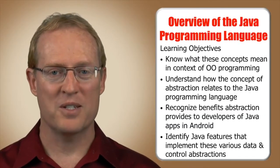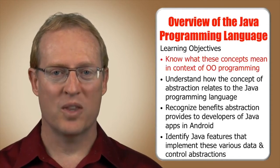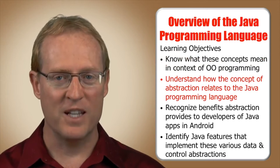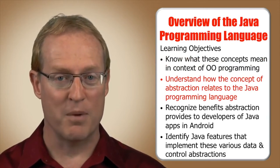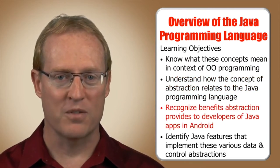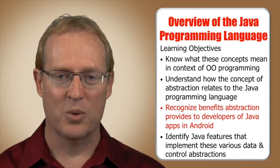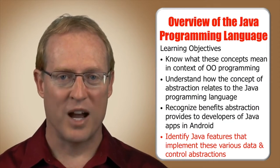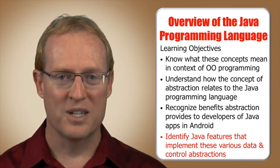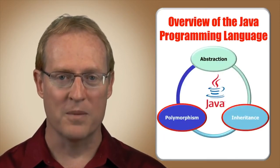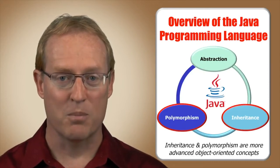Now that you've completed the first part of this lesson, you should know what abstraction, inheritance, and polymorphism mean in object-oriented programming, understand how abstraction relates to the Java programming language, recognize the benefits abstraction provides developers of Java apps in Android, and be able to identify Java features that implement various data and control abstractions such as conditional statements, loops, classes, and interfaces. The next part examines inheritance and polymorphism in more detail.